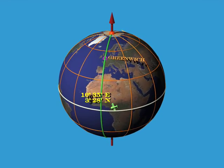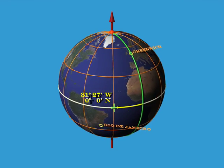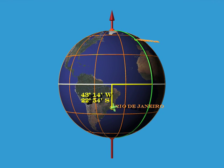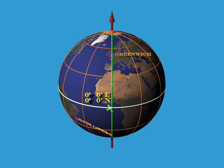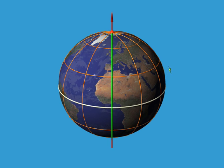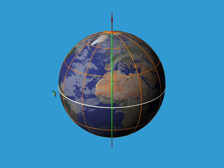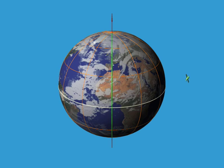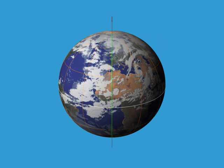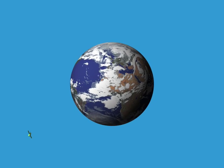Since we need two numbers to specify a location on the surface of the Earth, we say that the sphere is two-dimensional, and mathematicians often call it S2. Finally, if we let our little plane leave the Earth and fly off into space, then to locate it we need to give three numbers: latitude, longitude, and the altitude above the Earth. Since we now need three numbers to say where we are in outer space, we say that space is three-dimensional.